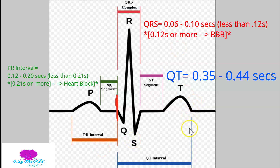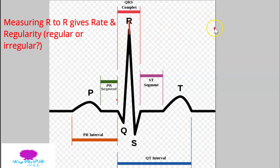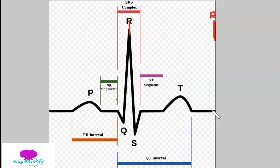I almost forgot about the R-to-R measurement. In order to get the rate, we measure the R wave from one QRS complex to the R wave of another. That R-to-R measurement gives you the rate. Based on all of these interval values, you can determine what rhythm the patient is in.